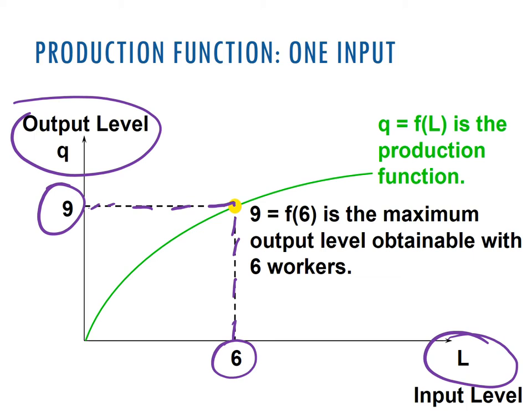One thing to note is the shape of this production function. It goes up more steeply and then levels off. In other words, the slope is steeper, and then it flattens out as the number of workers goes up.